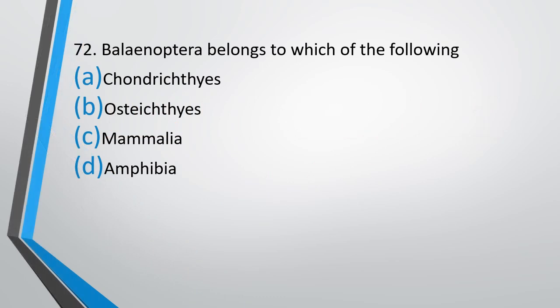Question No. 72. Balaenoptera belongs to which of the following? Option A: Chondrichthyes. Option B: Osteichthyes. Option C: Mammalia. Option D: Amphibia. The correct answer is Option C, that is Mammalia. Balaenoptera is the scientific name of the Blue Whale.